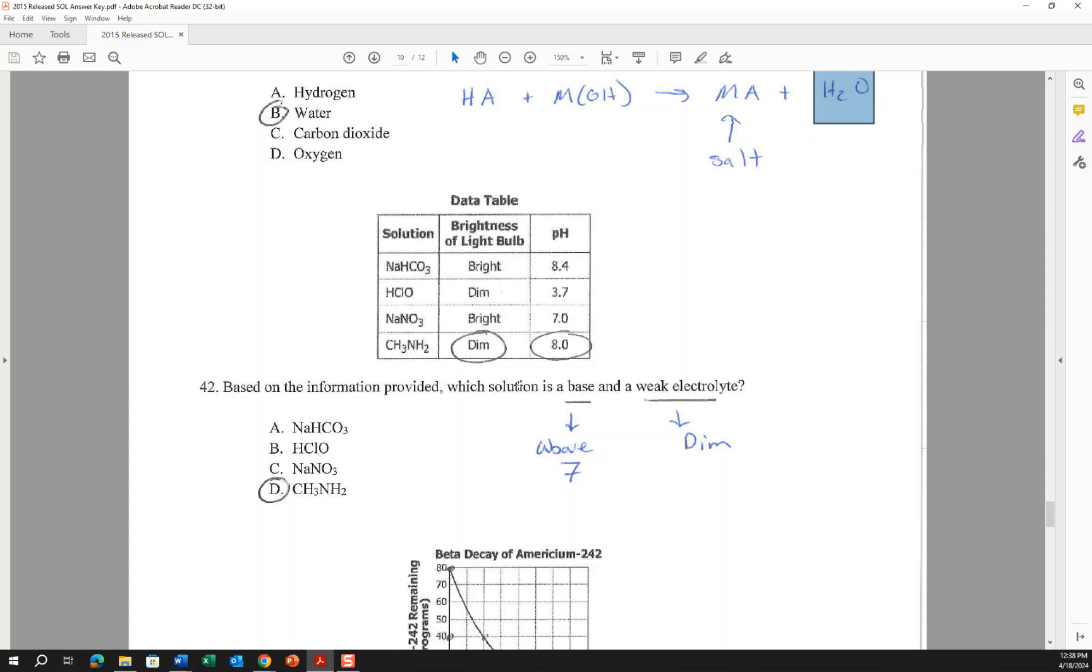Based on the information provided, which solution is a base and a weak electrolyte? A strong electrolyte would have a bright light bulb using the light bulb test, a weak electrolyte would have a dim light bulb. So we're looking for a dim bulb, either this one or this one. But base means a pH greater than 7, so this would be an acid. If they had asked for an acidic solution with a weak electrolyte, it would be this choice. But a basic solution weak electrolyte would be that. If they had said strong electrolyte basic solution, we would be going with that because it's bright. This would be a neutral strong electrolyte.